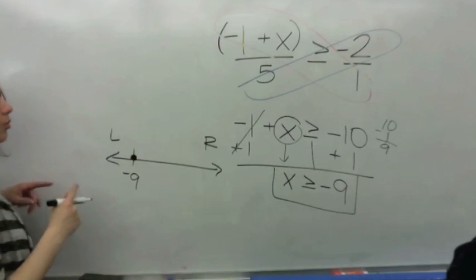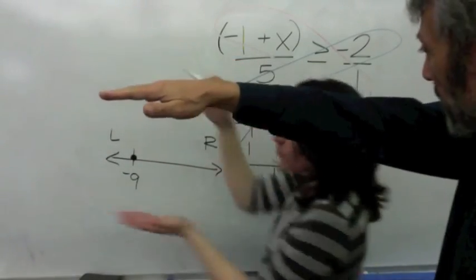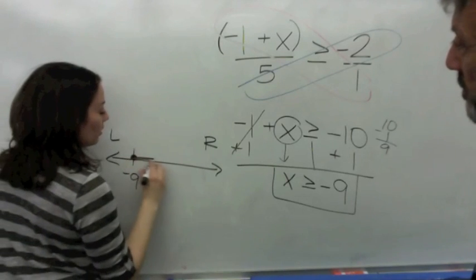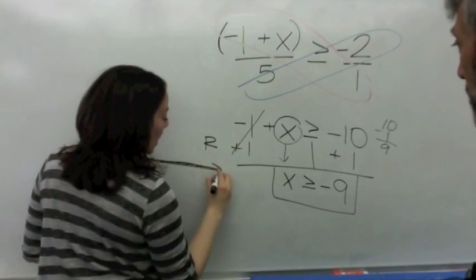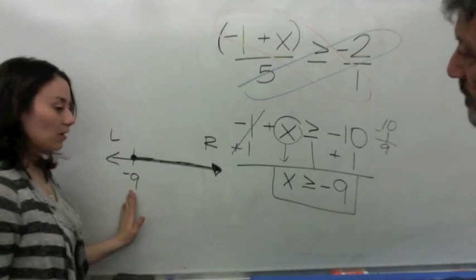Okay? So, we're going to go greater than. So, it's greater than right. We're going to go to the right. And, we're going to shade all of these numbers in. And, the answer will be all numbers greater than negative nine. Okay.